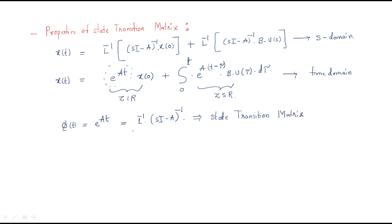The state transition matrix has a very important role in analyzing state space analysis. Now we will discuss the properties of the state transition matrix. The first property: phi(0) — meaning if we substitute time equals 0 — it will become e^(A times 0). Since e^0 equals 1, but because it is in matrix form, we get the identity matrix I. So phi(0) equals I.